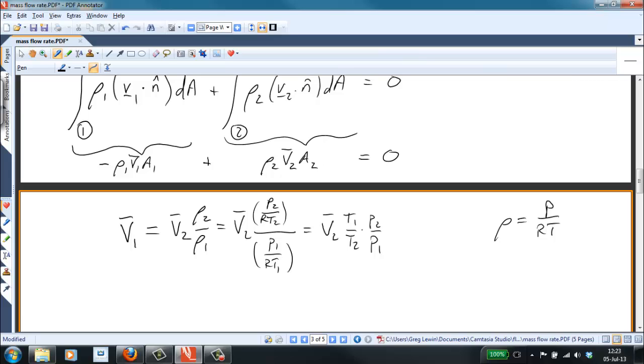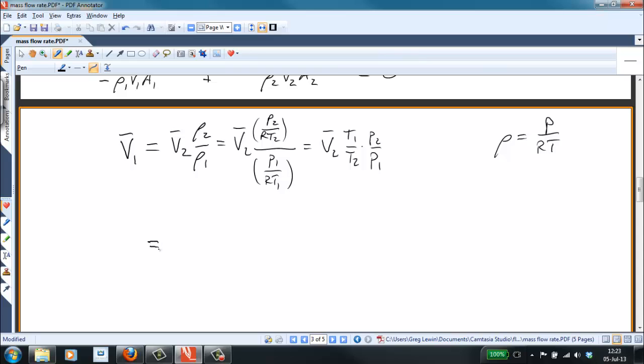And then we can plug in some numbers. We plug in some numbers and V two, we were told, was a thousand feet per second. T one was equal to 540 Rankine, and T two was equal to 453 Rankine. P two was equal to 18.4 PSIA. We're using the ideal gas law, so it's very important we use absolute pressures, of course. And P one was a hundred PSIA. For those of you who can't do the math in your head, you plug it into your calculator, and you come out with two hundred and nineteen feet per second.